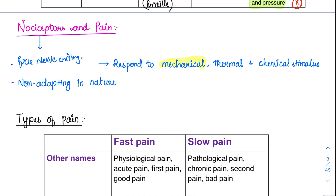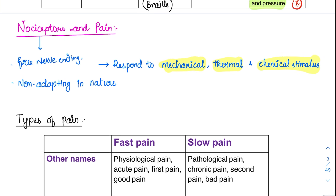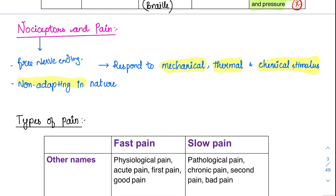They respond to any kind of mechanical stimuli, thermal stimuli, and chemical stimuli. Some chemicals can burn us, and both mechanical injury and thermal injury can cause severe pain. These receptors are almost non-adapting in nature.